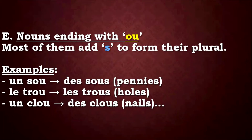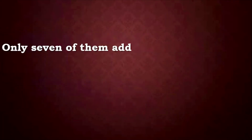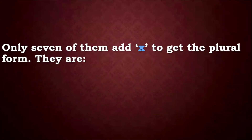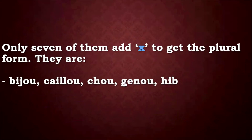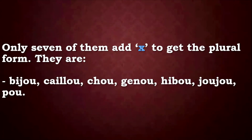But there are seven nouns in French that use X to get the plural. Let's list them: bijou, caillou, chou, genou, hibou, joujou, pou. These seven words are the only nouns in French ending in -OU where the plural is formed by adding X. The rest use S.